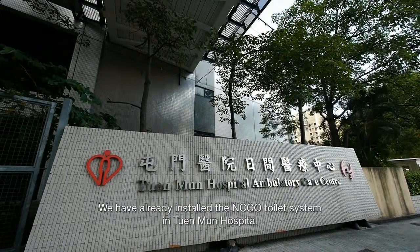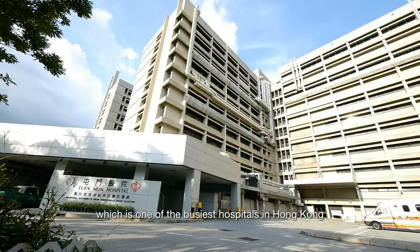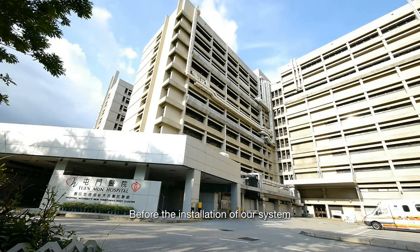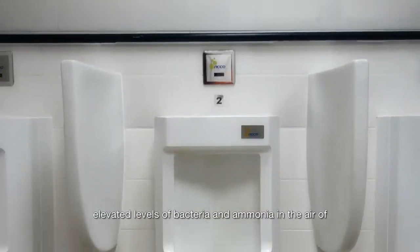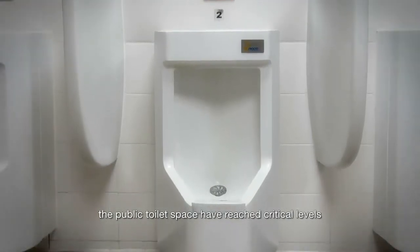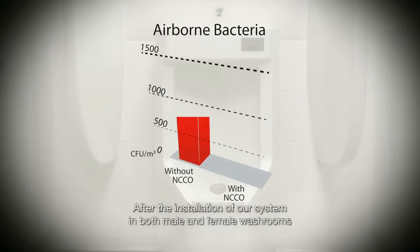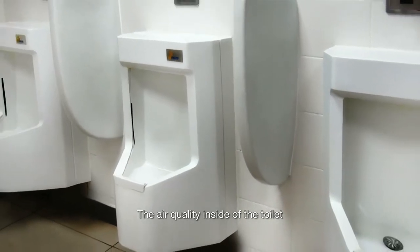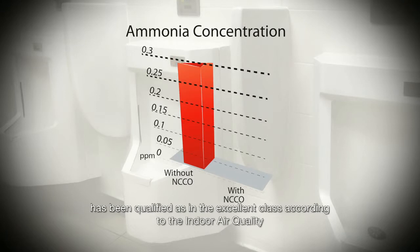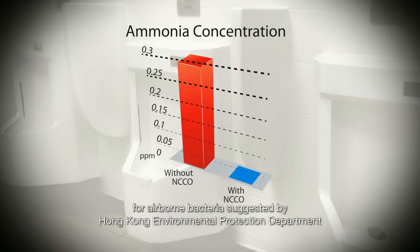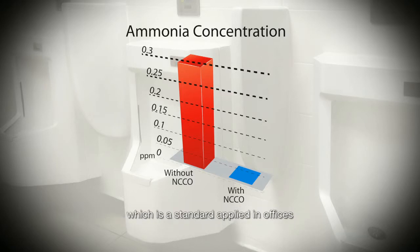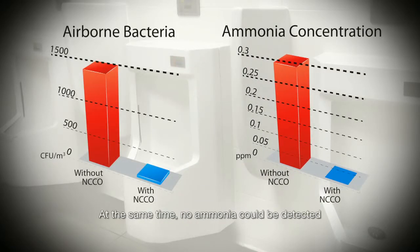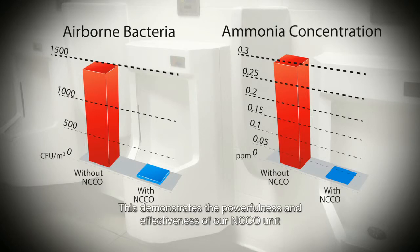We have already installed the NCCO toilet system into Moon Hospital, which is one of the busiest hospitals in Hong Kong. Before the installation of our system, elevated levels of bacteria and ammonia in the air of the public toilet space had reached critical levels. After the installation of our system in both male and female washrooms, the amounts of both pollutants have decreased significantly. The air quality inside the toilet has been qualified as in the excellent class according to the indoor air quality for airborne bacteria suggested by the Hong Kong Environmental Protection Department, which is a standard applied in offices. At the same time, no ammonia could be detected. This demonstrates the powerfulness and effectiveness of our NCCO unit.